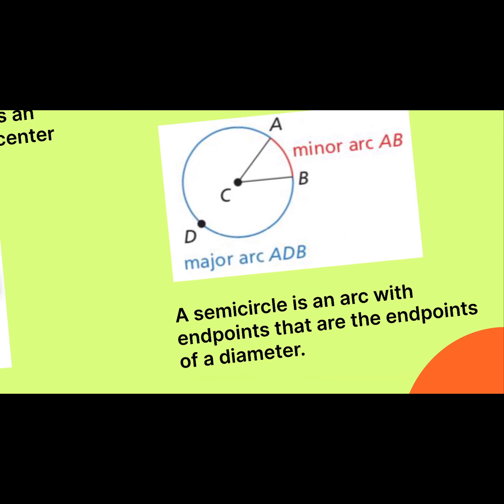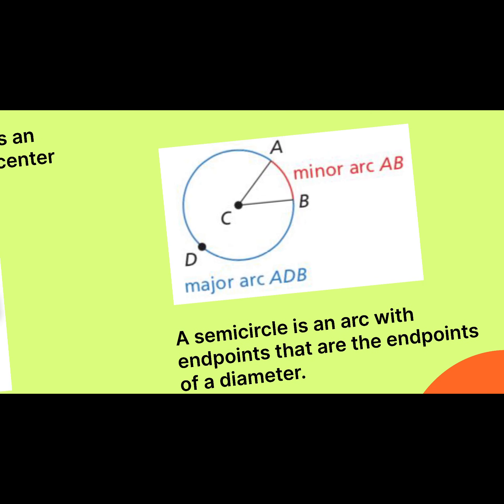Another two terms. We have what's considered the minor arc and the major arc. When we look at that example, the minor arc is what is directly created — and probably what we look at more naturally — by our angle.